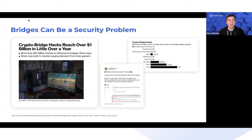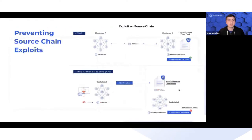Bridges can be a great utility to the ecosystem in that they allow assets to move cross-chain and enter new markets, but they also carry substantial risk. With automation and proof of reserve, we can actually address some of the risk that applies to protocols using bridged assets.